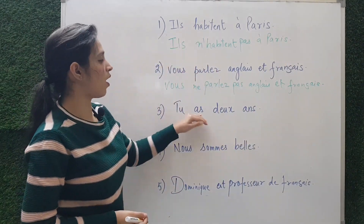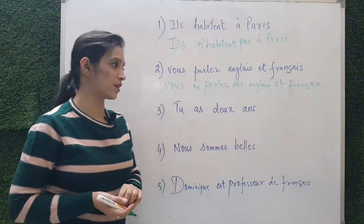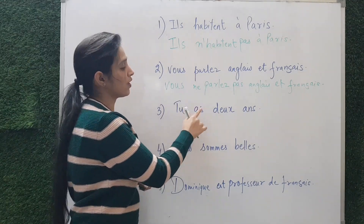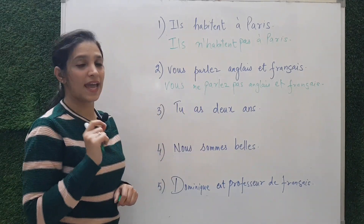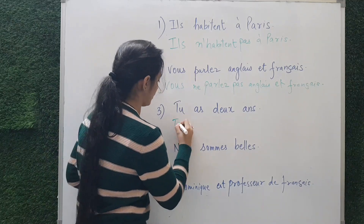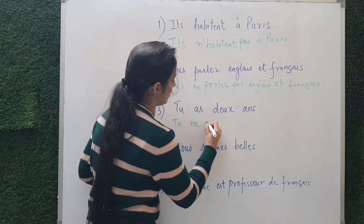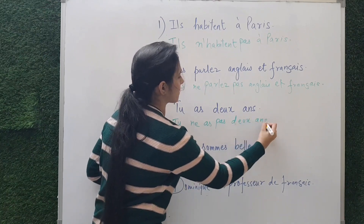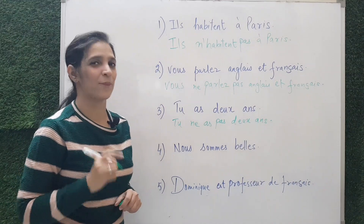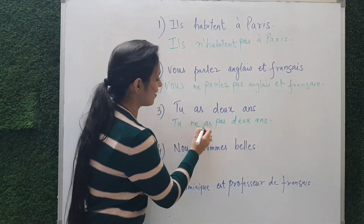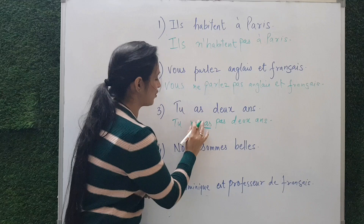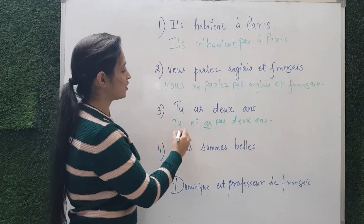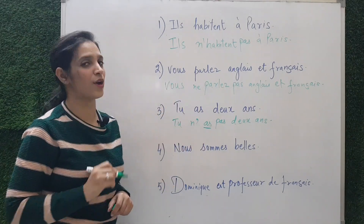Next: 'Tu as deux ans' — 'You are two years old.' The verb is 'as.' Since 'as' starts with a vowel, we use 'n apostrophe' rather than 'ne.' The negative form is 'Tu n'as pas deux ans' — 'You are not two years old.'